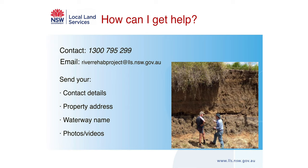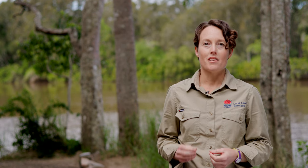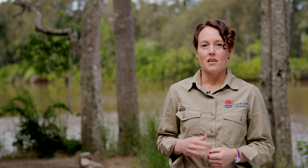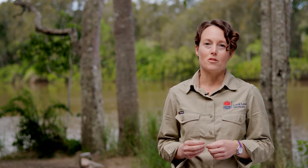If you're able to fund works yourself, we can provide guidance and referrals to contractors. Otherwise, the best thing to do is get in touch with us so we can start doing impact assessments, provide advice on best practice and keep you updated if funding opportunities become available. We've just touched on a range of best practice actions you can do now to manage riverbank erosion on your property. Some erosion scenarios require hybrid solutions of hard engineering and revegetation. The next video tells more about these options and what's involved.